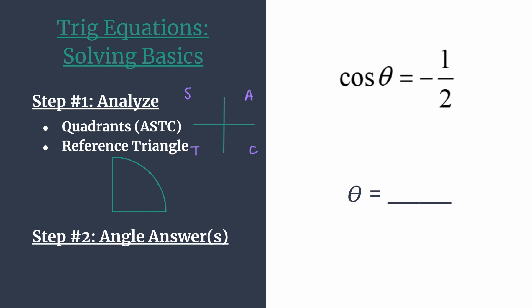So in quadrant one, all are positive. The A helps you remember that. The S tells you sine and its reciprocal cosecant are positive in quadrant two. Tangent and cotangent positive in quadrant three. And cosine and secant are positive in quadrant four.